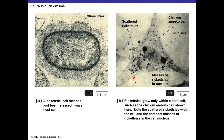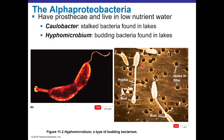Because Rickettsia is an intracellular parasite, it cannot be grown on usual lab media. It requires live cells — in this case, chicken embryo cells — where rickettsias form large masses inside the nucleus. The rickettsia can be seen scattered in the cytoplasm of these cells.